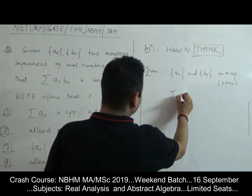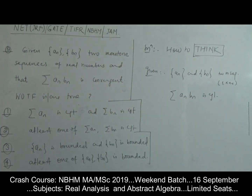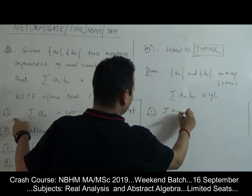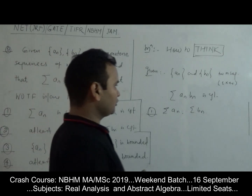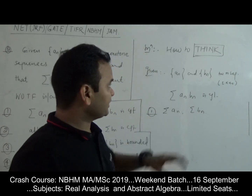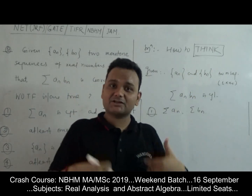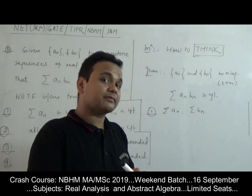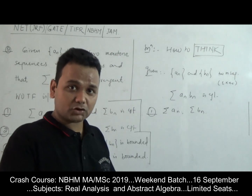Using the given information — two monotone sequences and the product series convergent — we need to determine what we can say about the individual series. The strategy here is: if we can find two monotone sequences such that the product series converges but one or both individual series diverge, then those options are false.